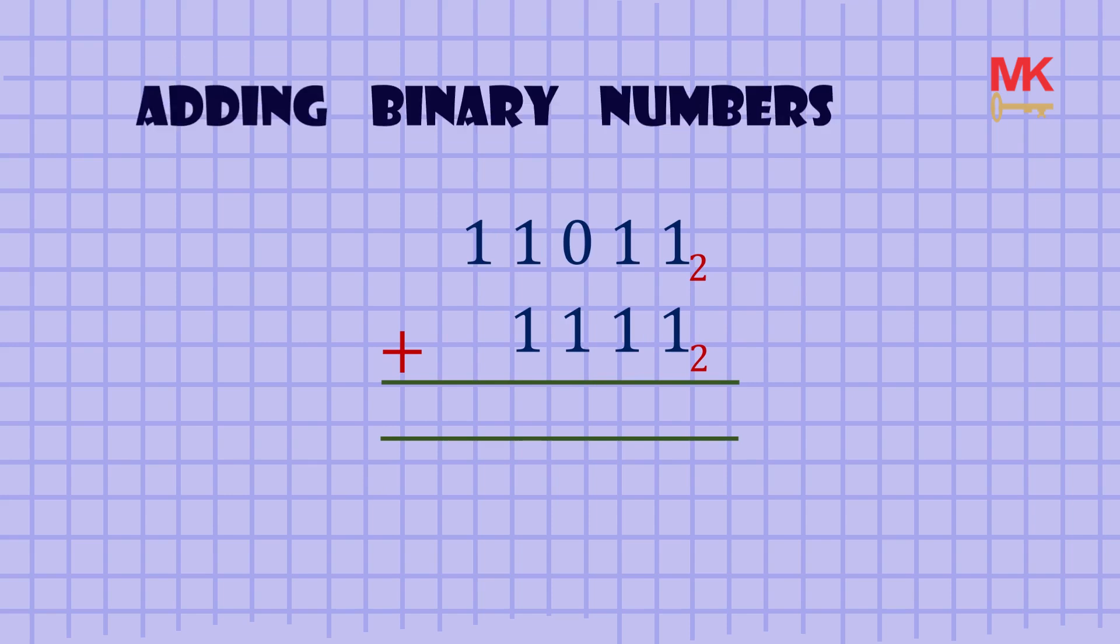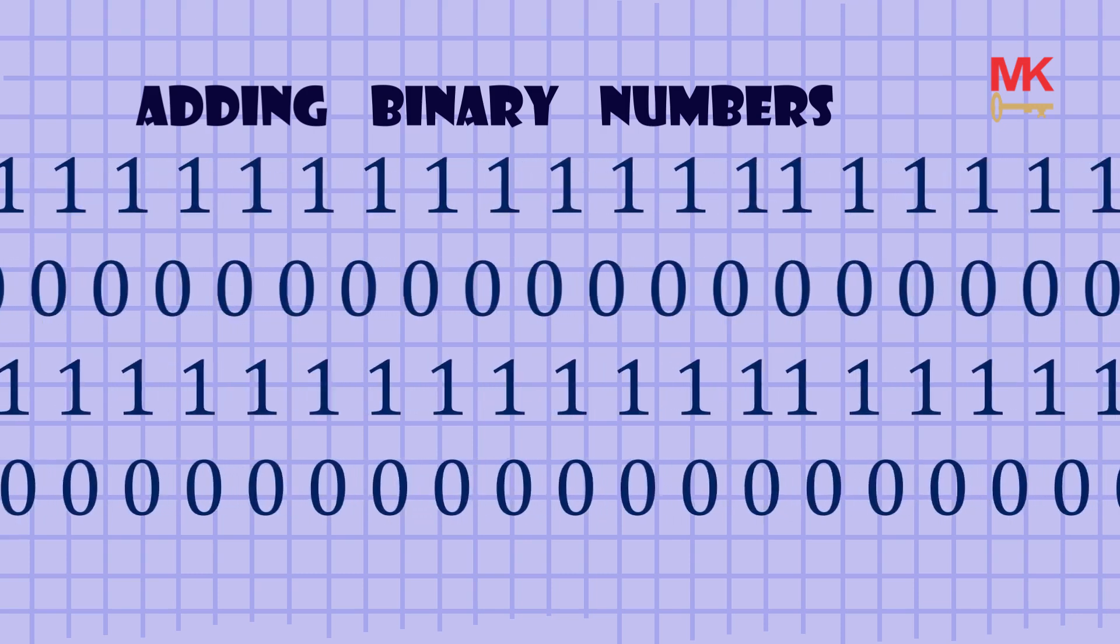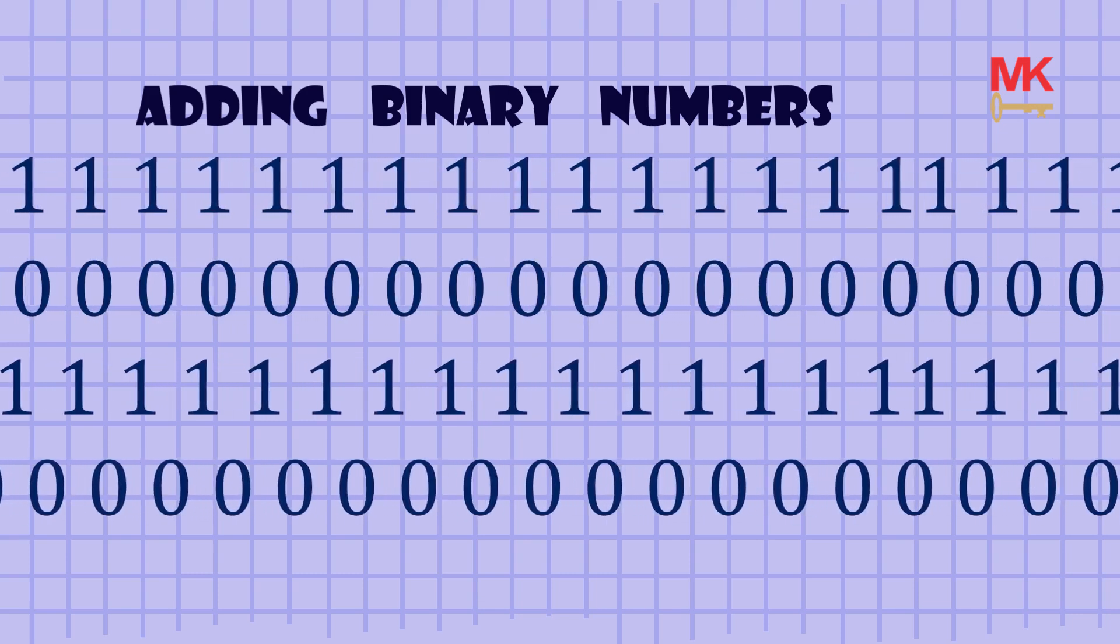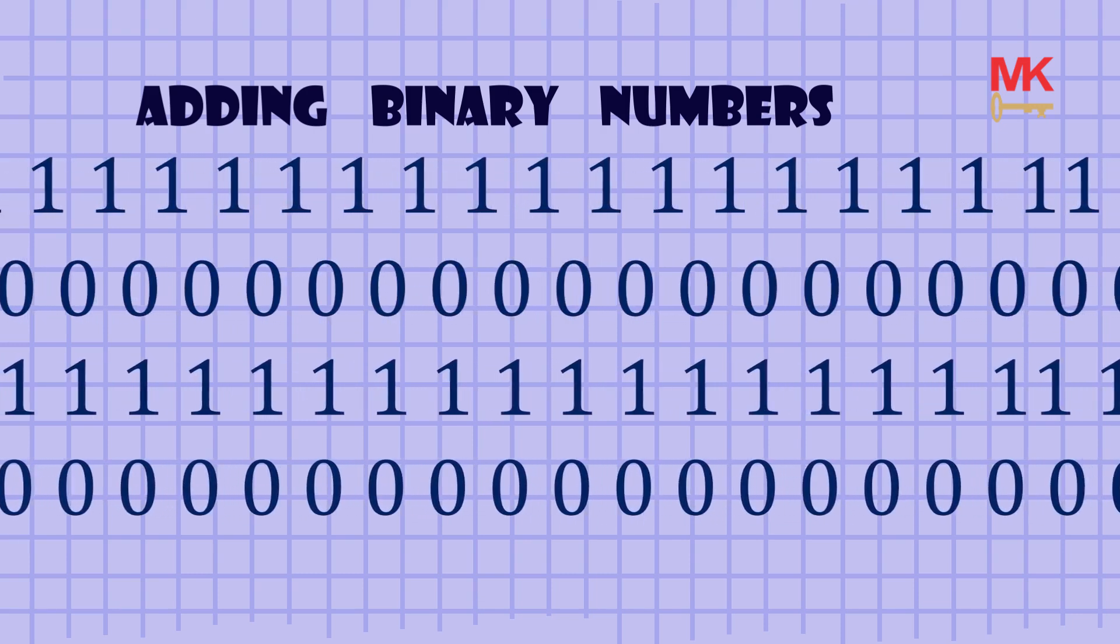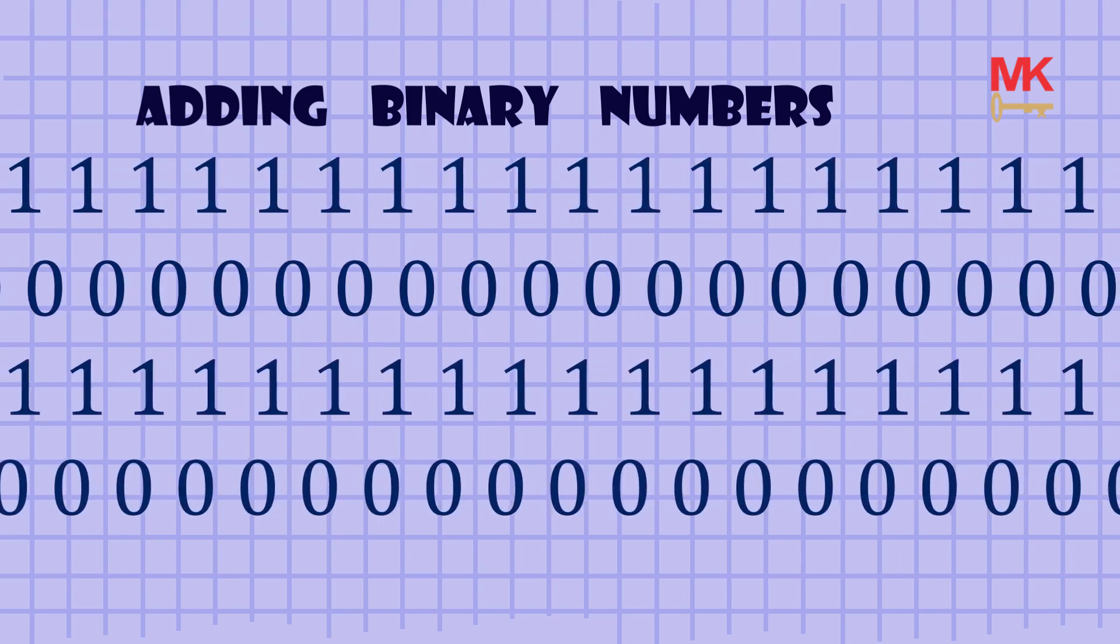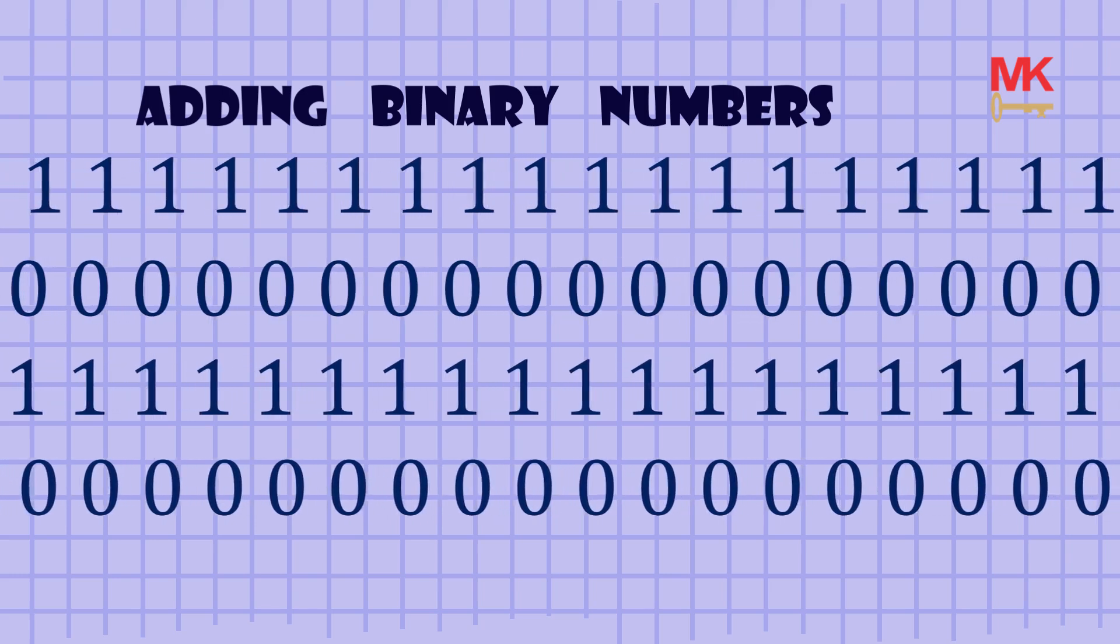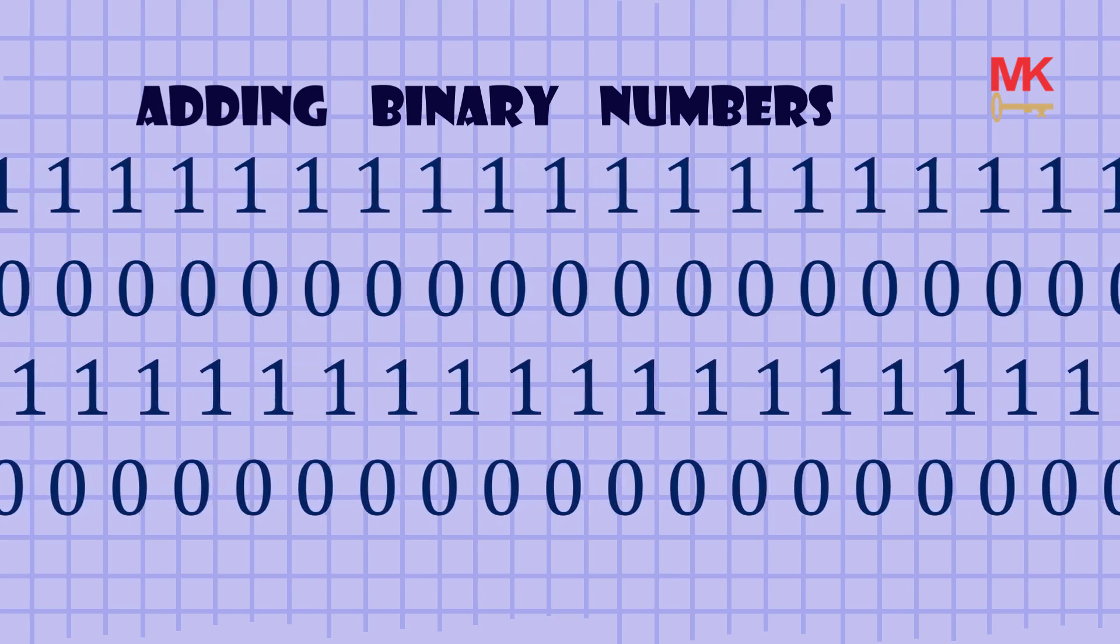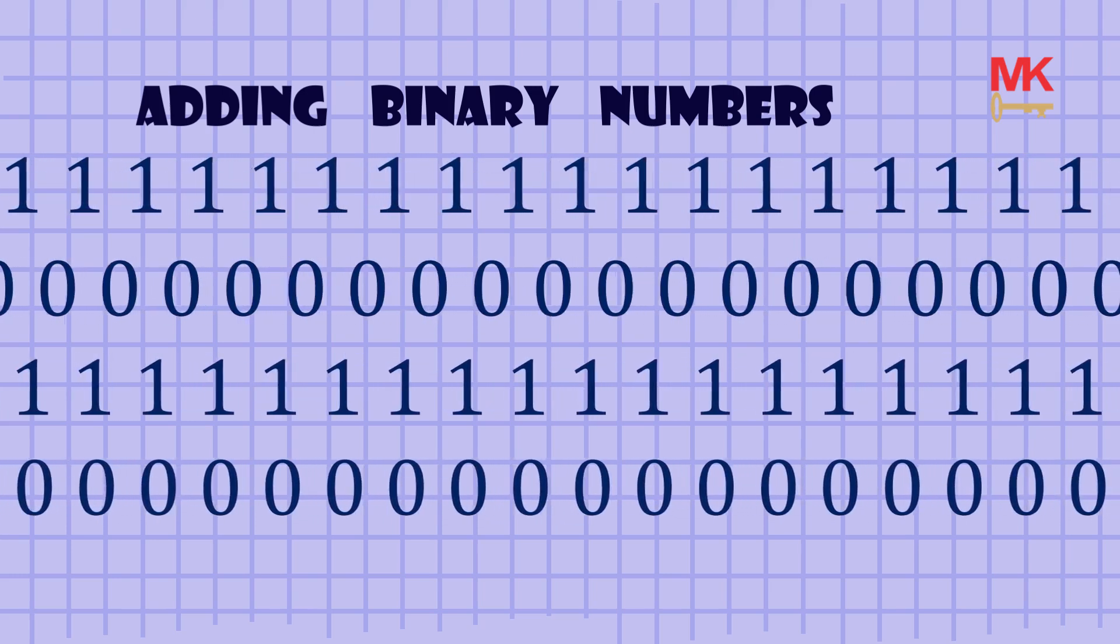First of all, what is a binary number? A binary number is also known as a base 2 number. It is a type of number that uses only two types of digits, zero and one. What this means is that any digit other than zero and one is not accepted or allowed in the binary system of numbers.